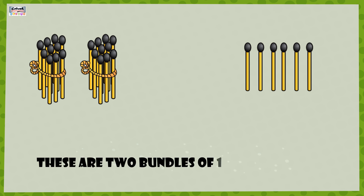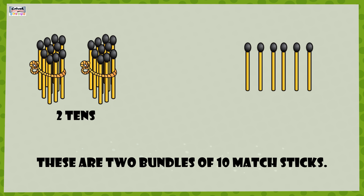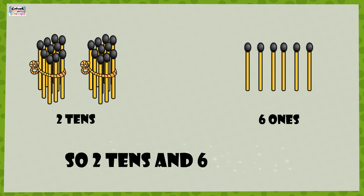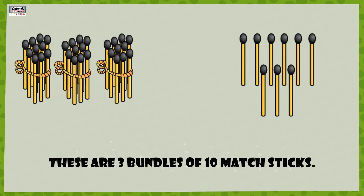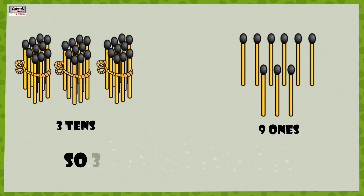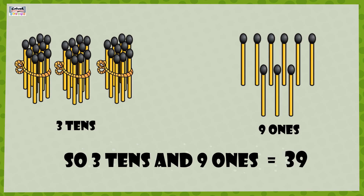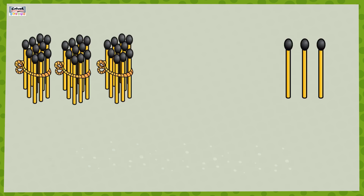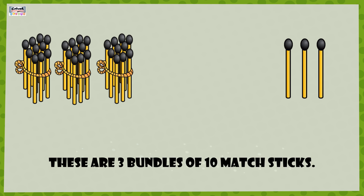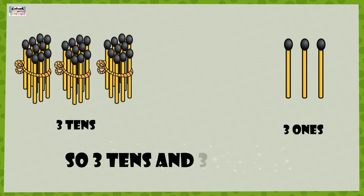These are two bundles of 10 matchsticks in each, so it is two 10s and these are 6 ones. Three 10s and nine ones. Three 10s and three ones is equal to 33.